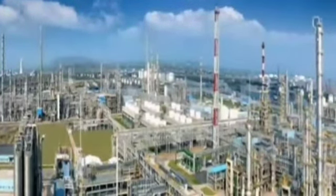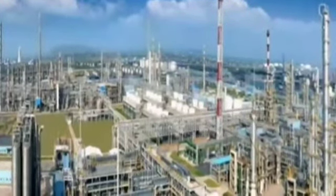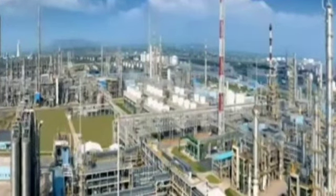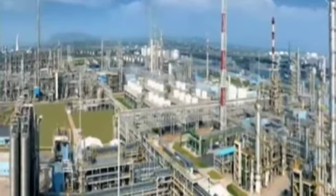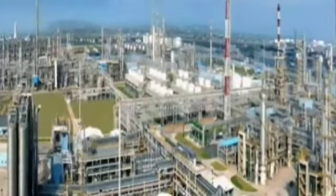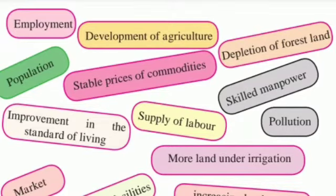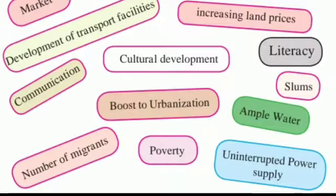As we learned in the previous chapter, when industries come up, opportunities are created automatically. People migrate to places where there are employment opportunities, they get a good income source, and there is a favorable condition of living which improves their lifestyle. Hence, people start living in such places, and industrial development attracts them to shift to these areas.